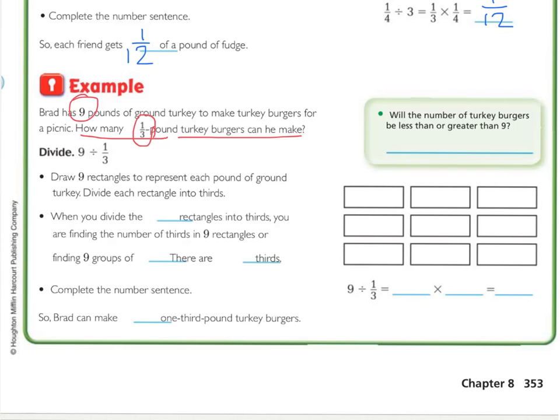Now this one doesn't necessarily have a key word to tell you that you're dividing. You have to infer. You're starting with a larger sum, and you're breaking it into smaller pieces, and so that is how we know it is a division. So we're starting with 9 and dividing it or breaking it into 1/3 size pieces. So is our answer going to be less than 9 or greater than 9? Well, we're taking a whole number and breaking it into smaller parts. So that means our answer should end up being greater than 9.